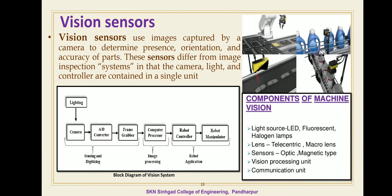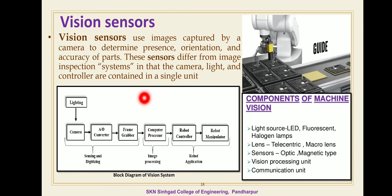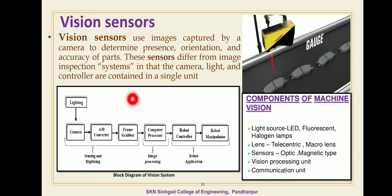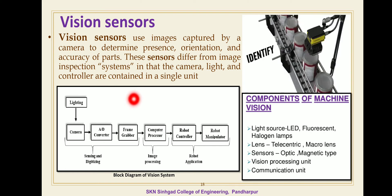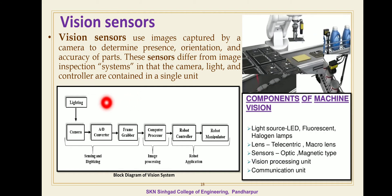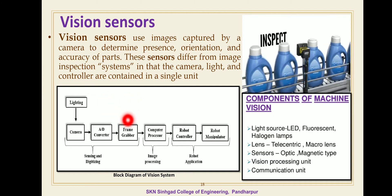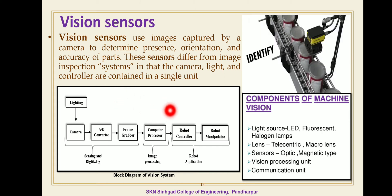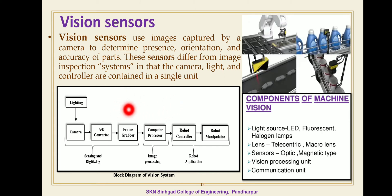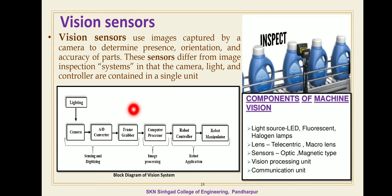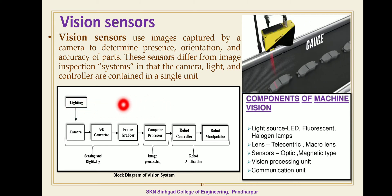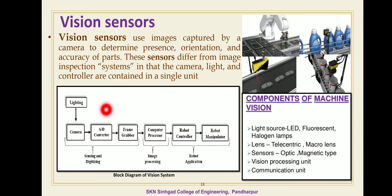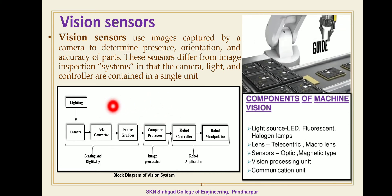A complete vision system consists of hardware and software for performing the different functions of sensing and processing the image, and utilizing the results to generate commands for the robot. The block diagram starts from lighting, and we use different types of illuminating techniques — front light illumination technique and back source illumination technique for lighting purposes.